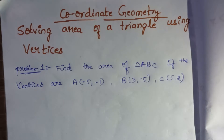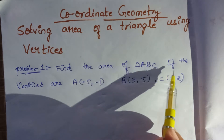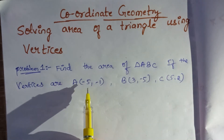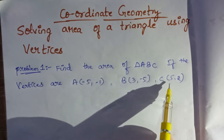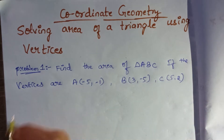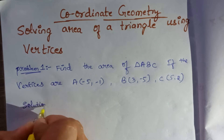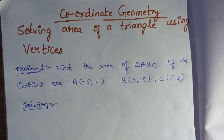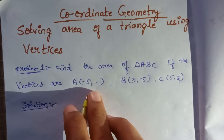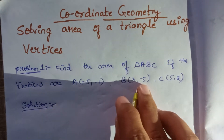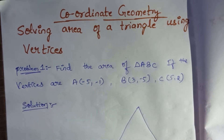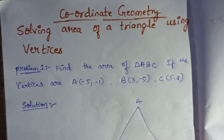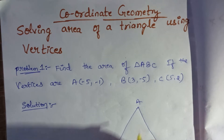Now in this video we are going to solve the area of a triangle using vertices. Here is the question: find the area of triangle ABC if the vertices are A(-5, -1), B(3, -5), and C(5, 2). We have to find the area of triangle ABC. We draw the triangle like this — this is A, this is B, and this is C.